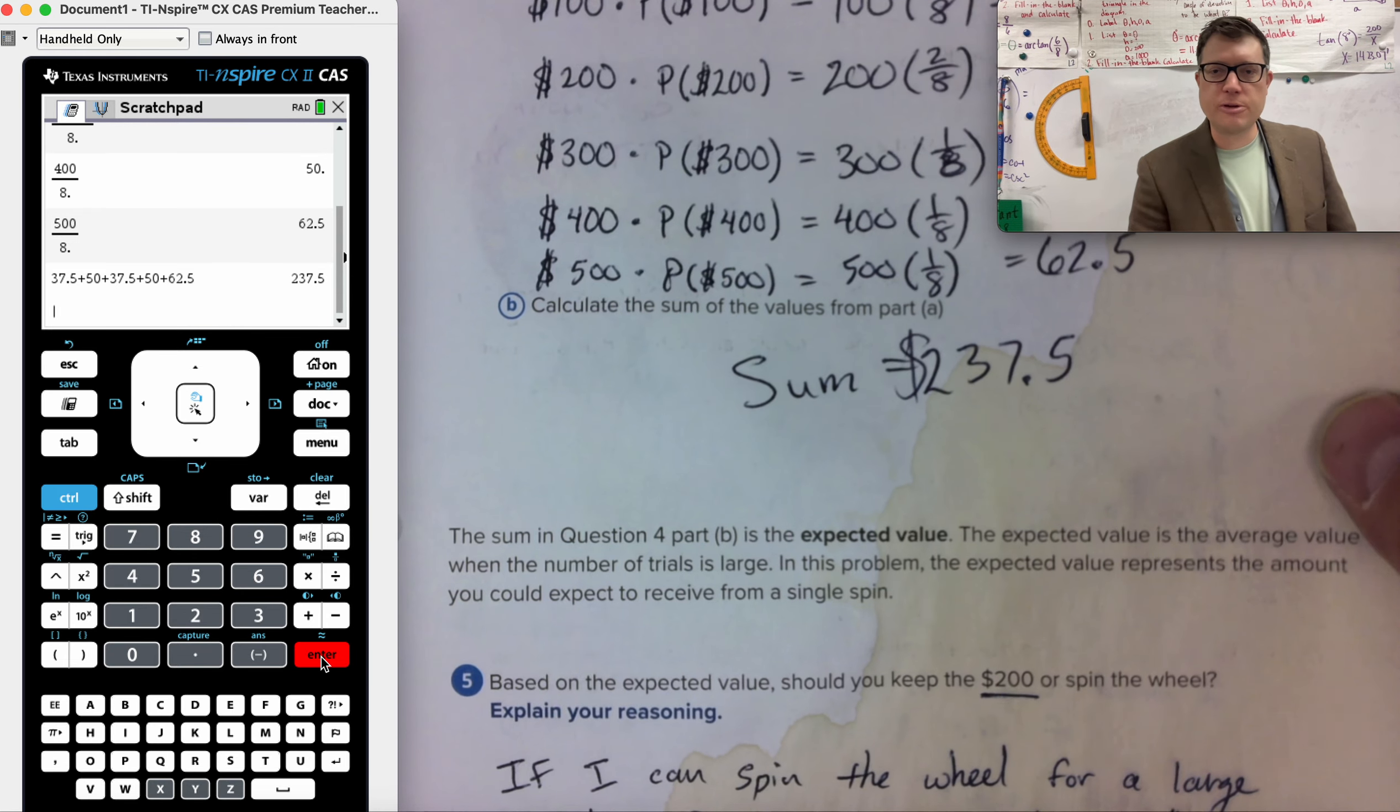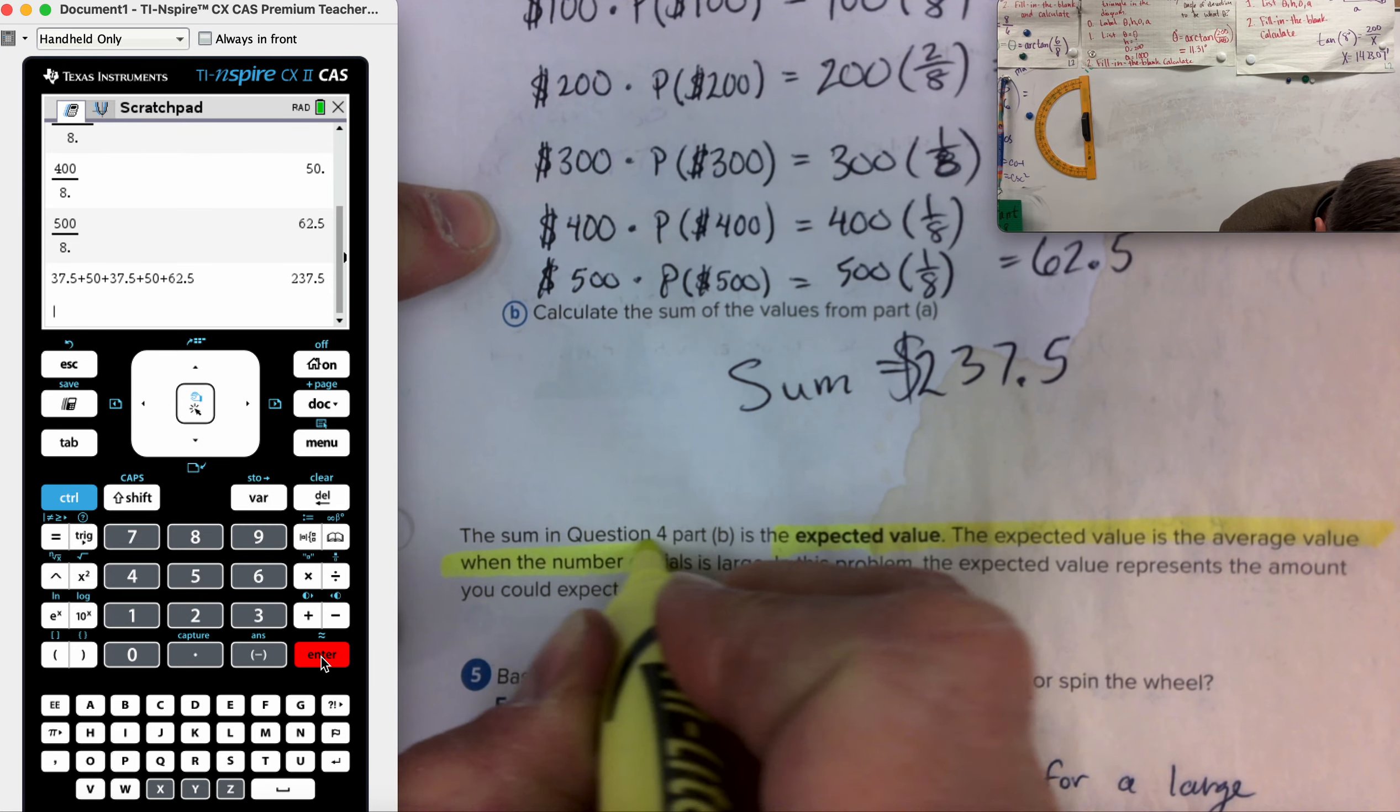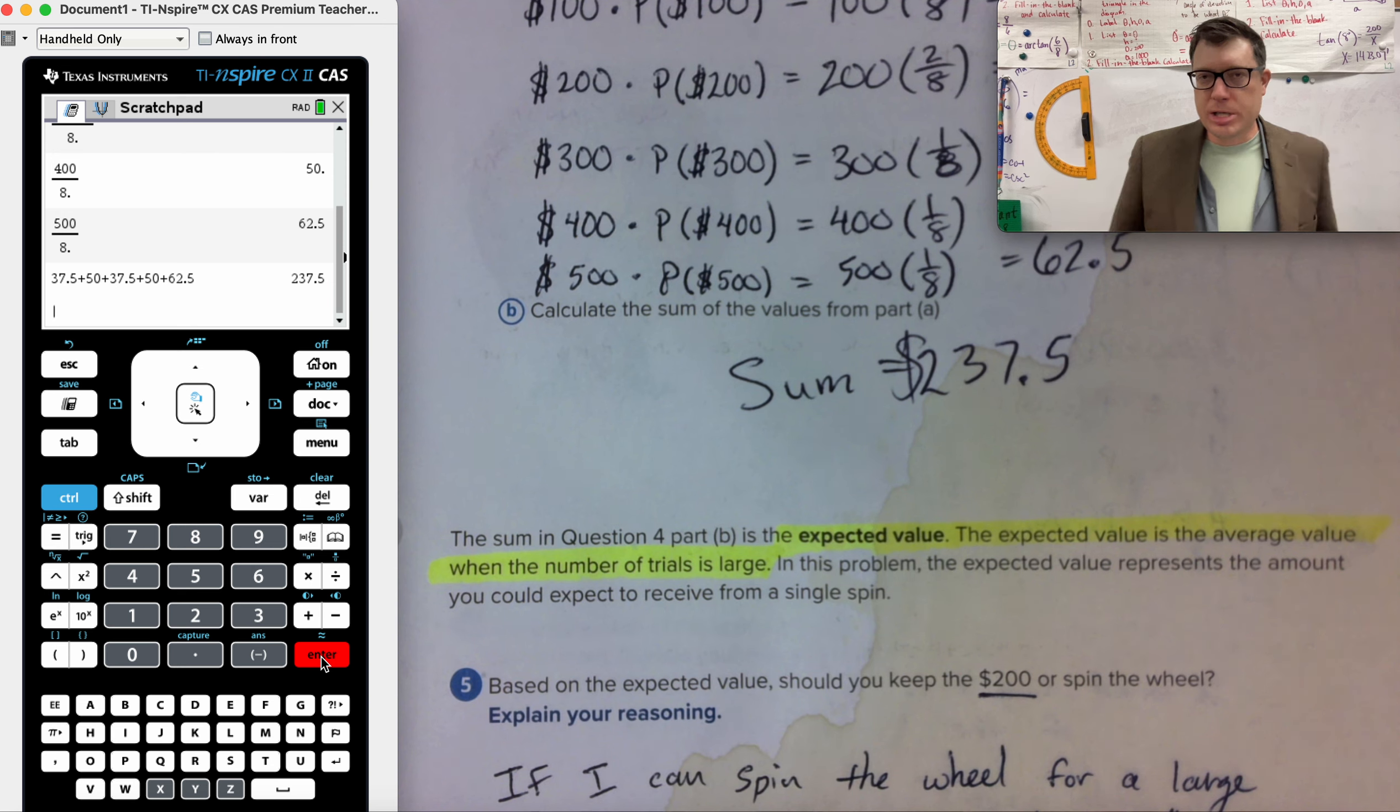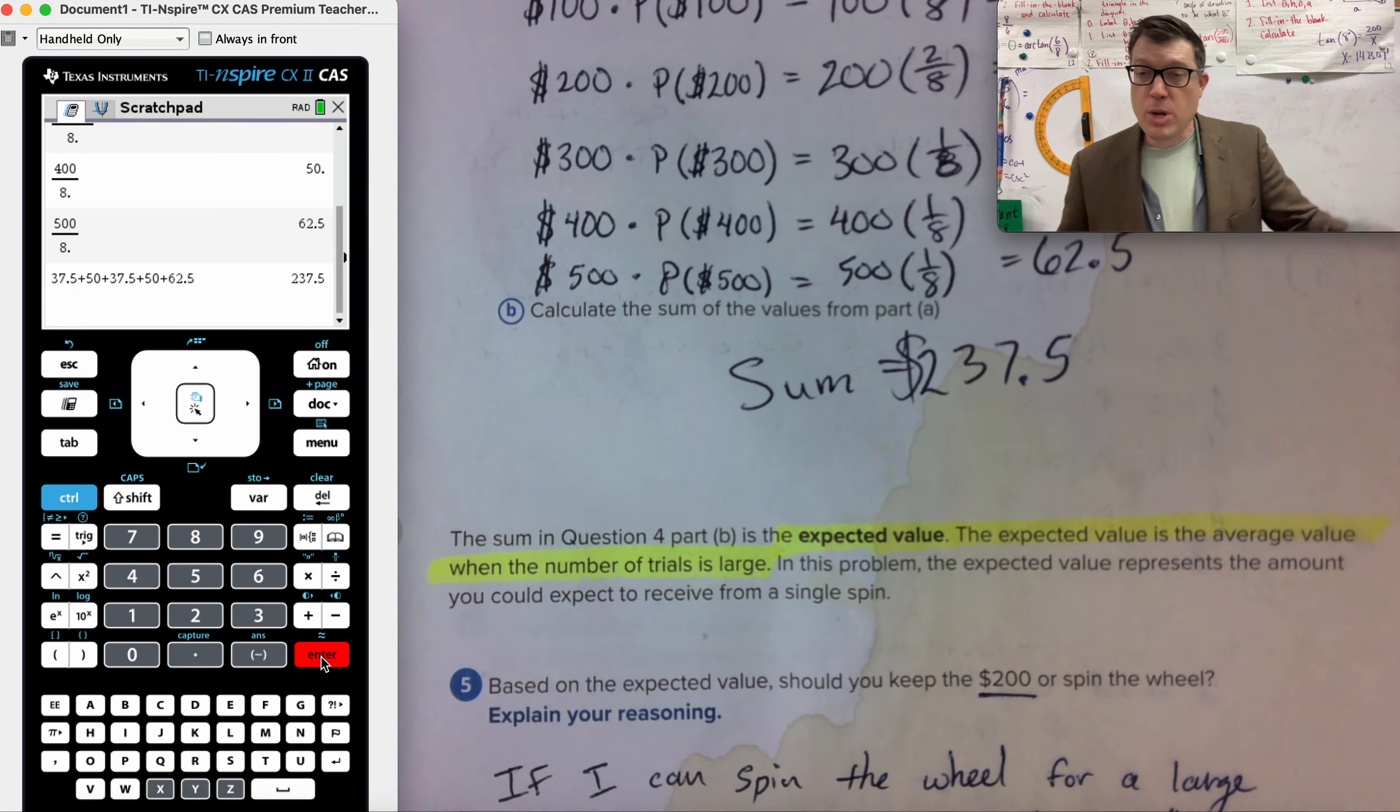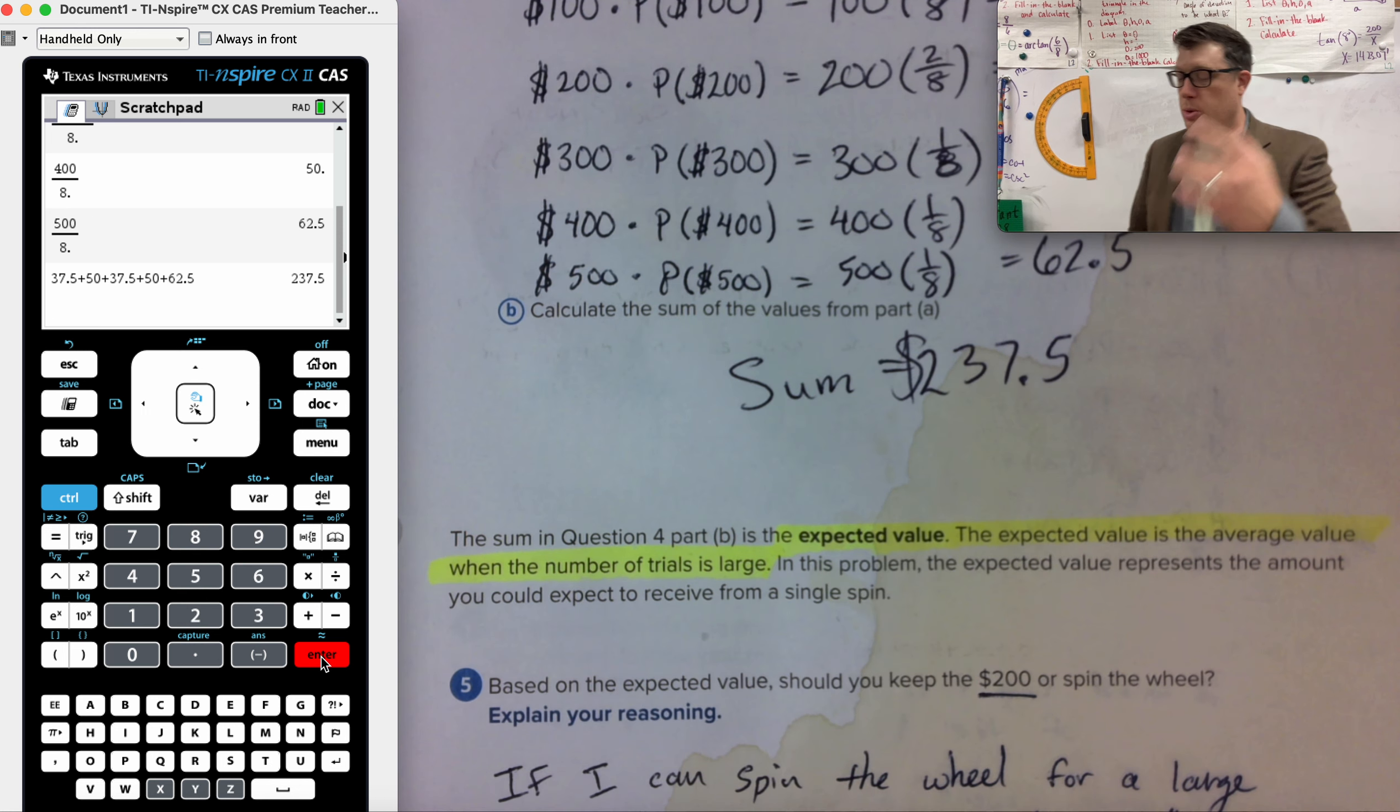The sum in question four is the expected value. The expected value is the average value when the number of trials is large. That's what I mean. You will not make the $37.50 because that's not an option for you. When you play this game and spin the wheel, you're either going to win 100 or 200 or 300 or 400 or 500. The 37.5 is not an option for you. But when all of us play this spin the wheel game, get 200 or more, on average, all of our amounts add up and we divide by the total. And this is what we get for an expected value.